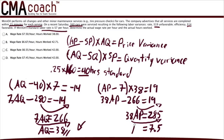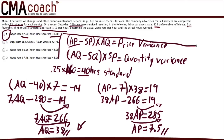Dividing 285 by 38, the answer is $7.50 — the actual labor rate paid to these workers. Looking at the multiple choice answers, the wage rate is $7.50 per hour and the hours worked were 38, so the correct answer is A. All you have to do is plug the numbers into the formulas and do the math. The key is to memorize these formulas for the exam, because the likelihood that they will appear is high.